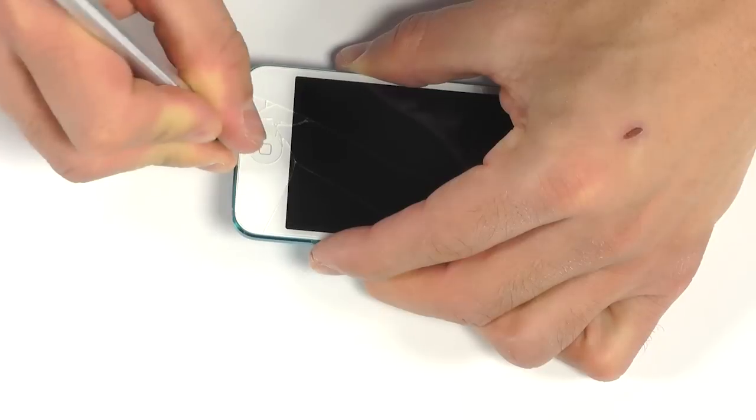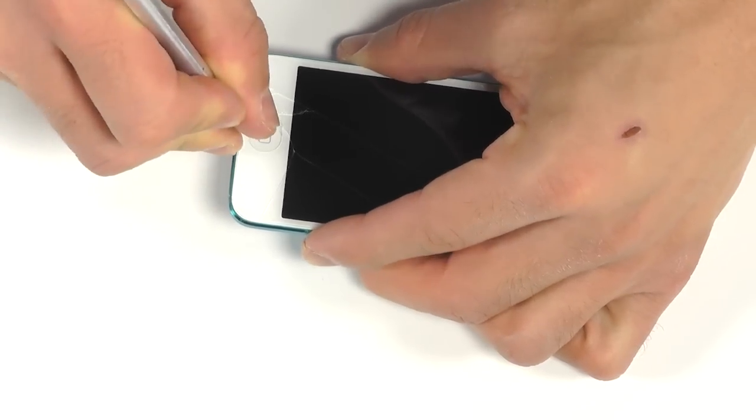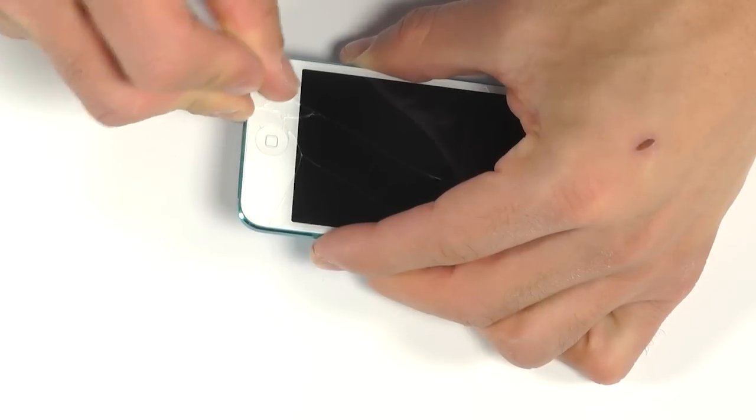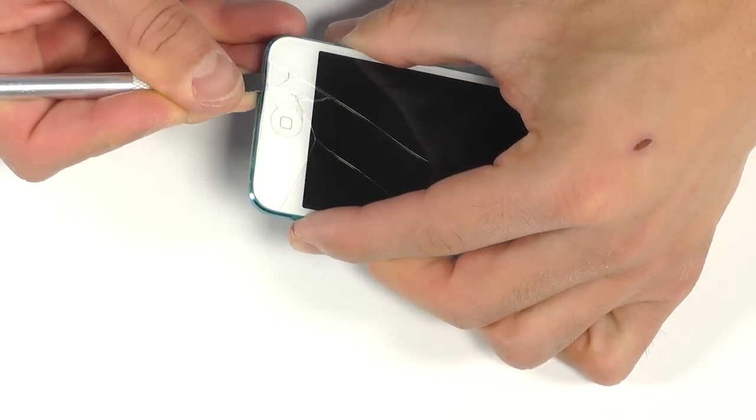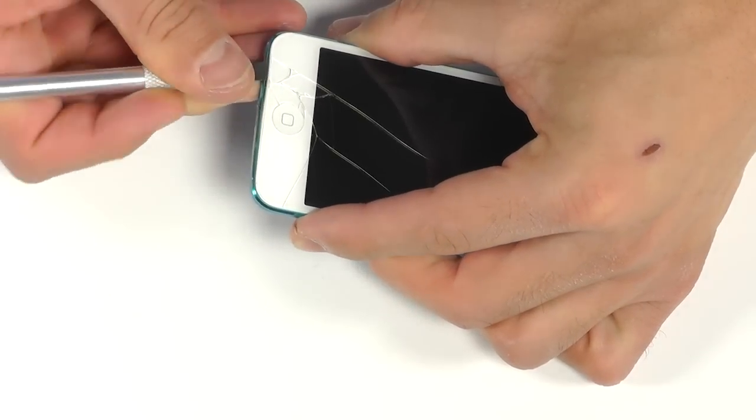Let's begin our entry into the iPod here with our precision knife kit with the squared off tip. We can use that to get between the display assembly and the base of the iPod to begin that separation.